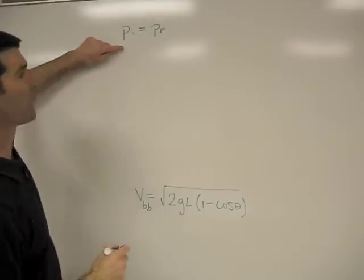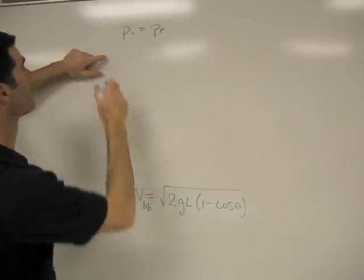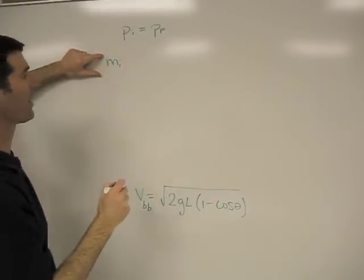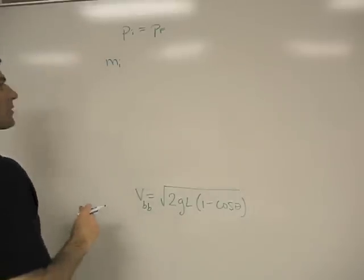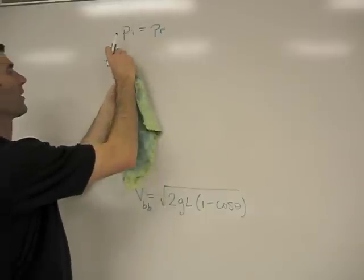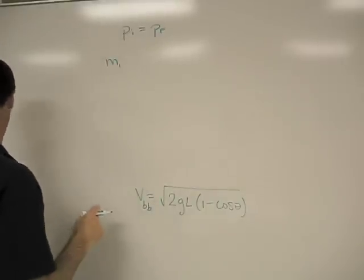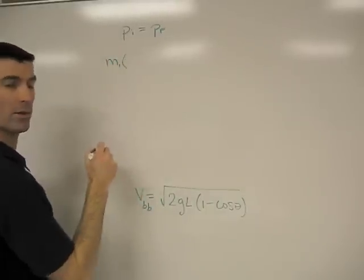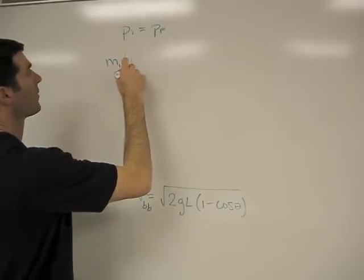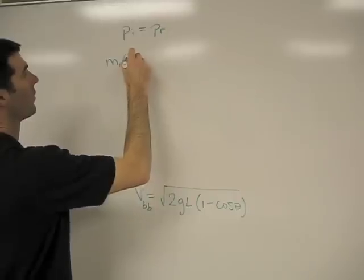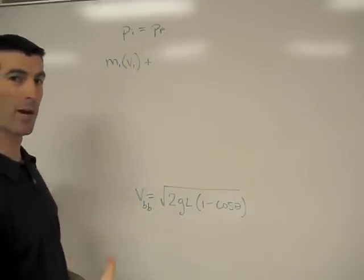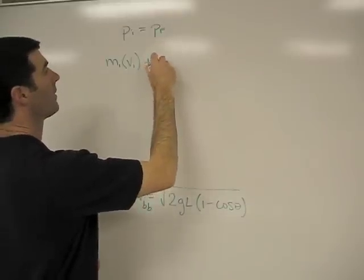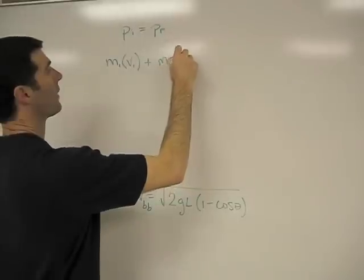And before the collision, we have just the mass of the, we should call that mass 1, let's call it m1. Mass 1 of the ball only, and we'll say velocity 1, plus the block is at rest. It's got no velocity.